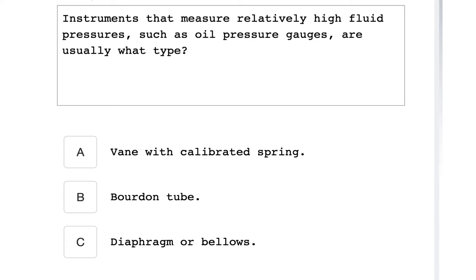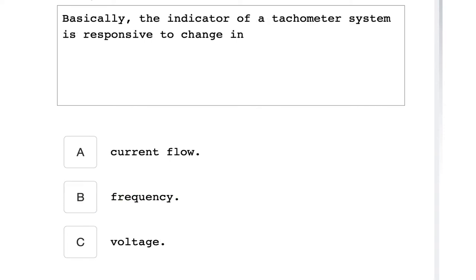Instruments that measure relatively high fluid pressure such as oil pressure gauges are usually what type? Bourdon tube. Basically the indicator of a tachometer system is responsive to a change in frequency.